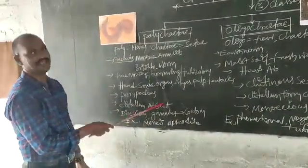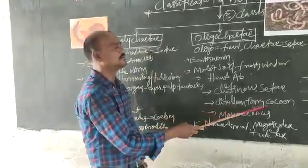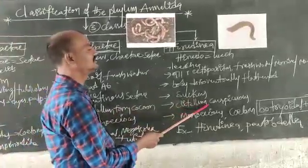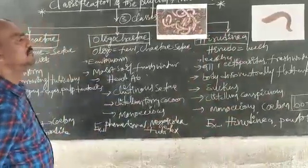Chitinous setae is absent in Oligochaeta. Chitinous setae forms the cocoon during the breeding season. Here, chitinous setae is also formed during the breeding season.